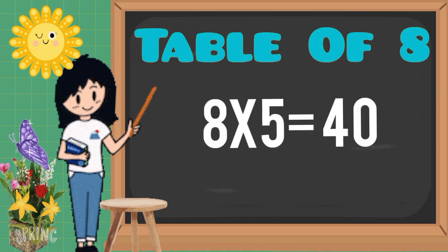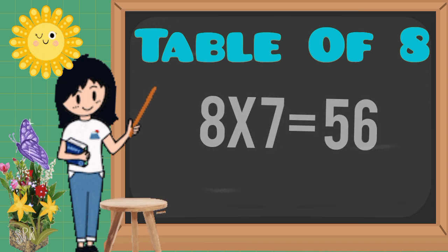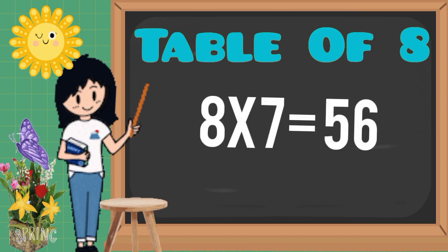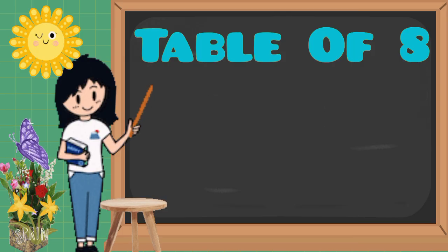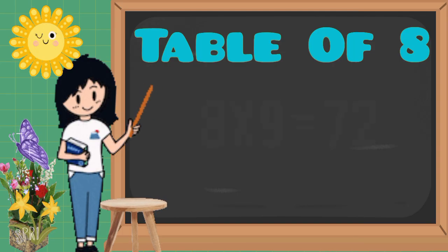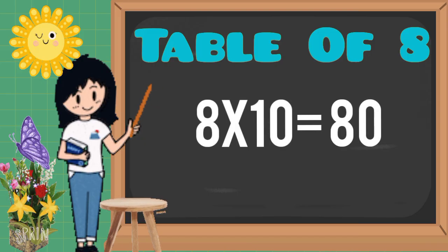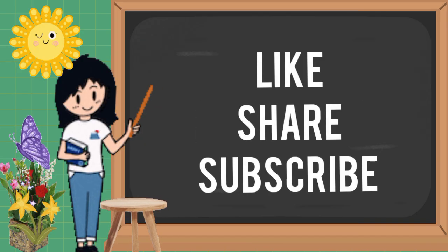Eight fives are forty, eight sixes are forty-eight, eight sevens are fifty-six, eight eights are sixty-four, eight nines are seventy-two, eight tens are eighty. Bye! See you next time.